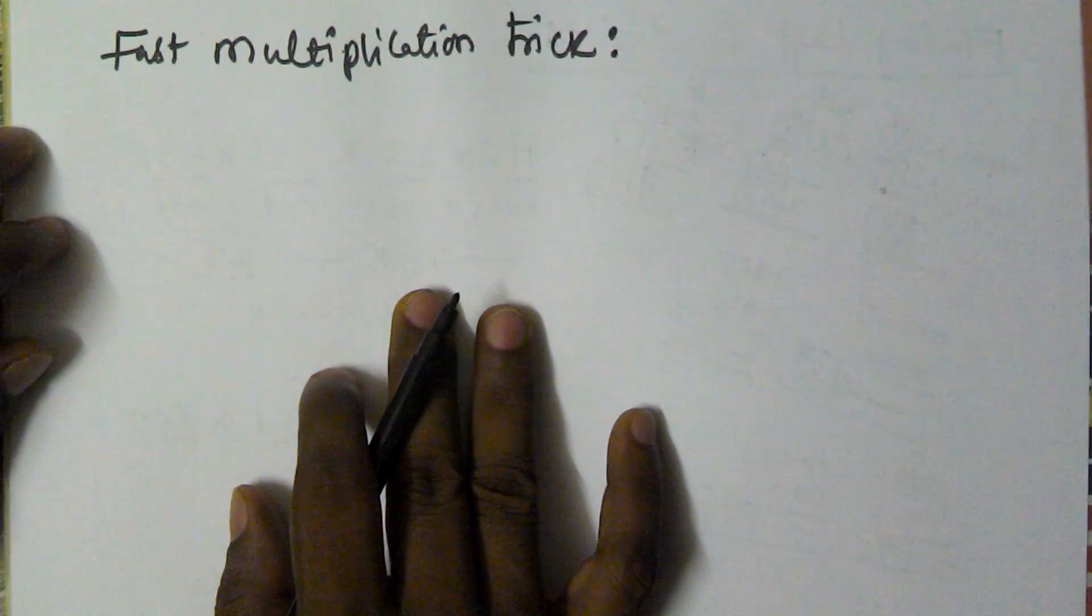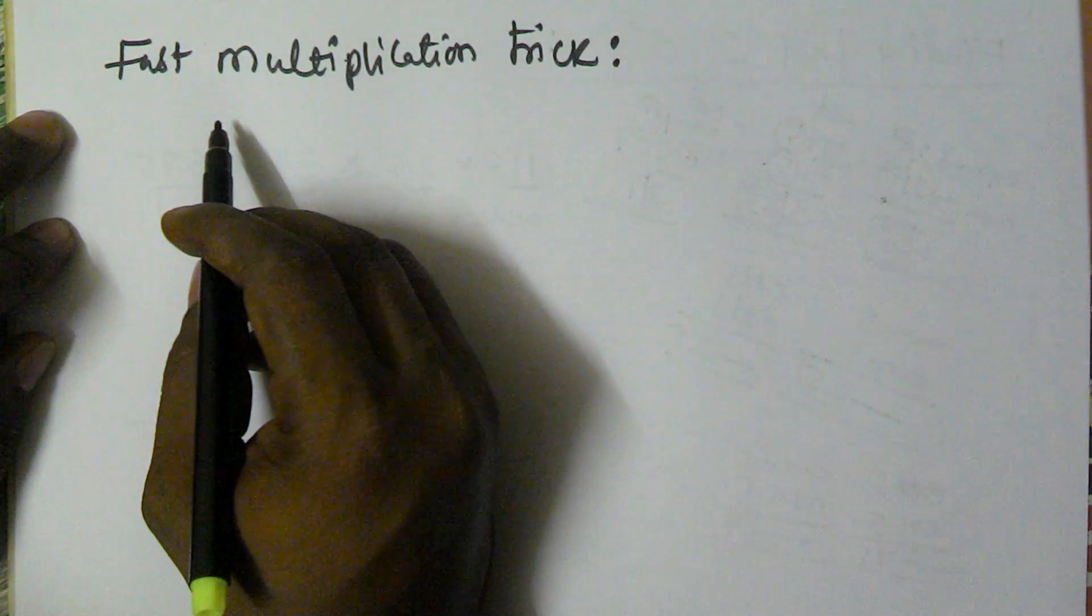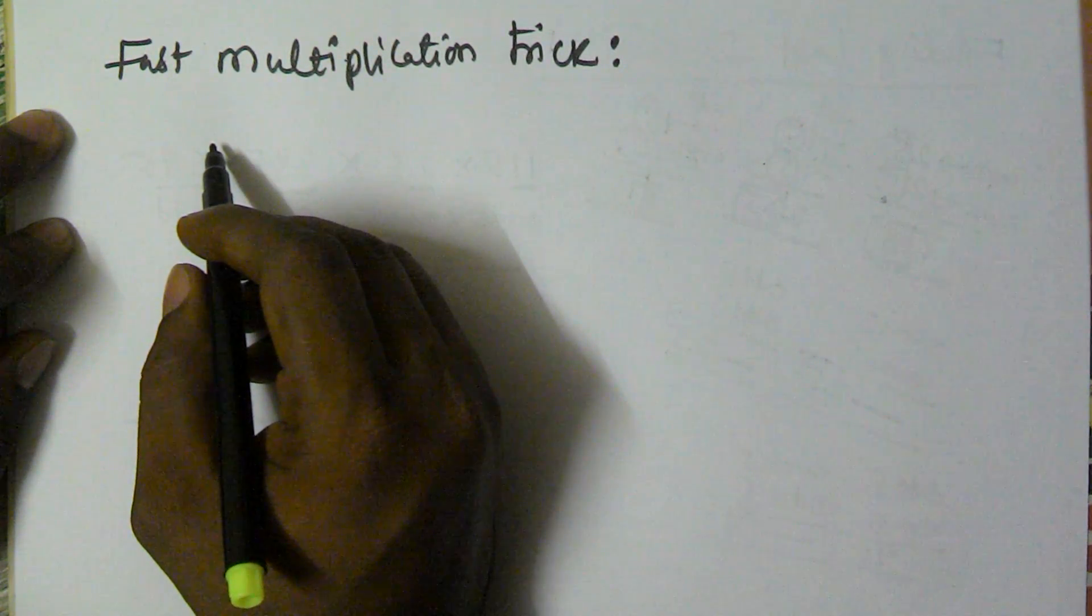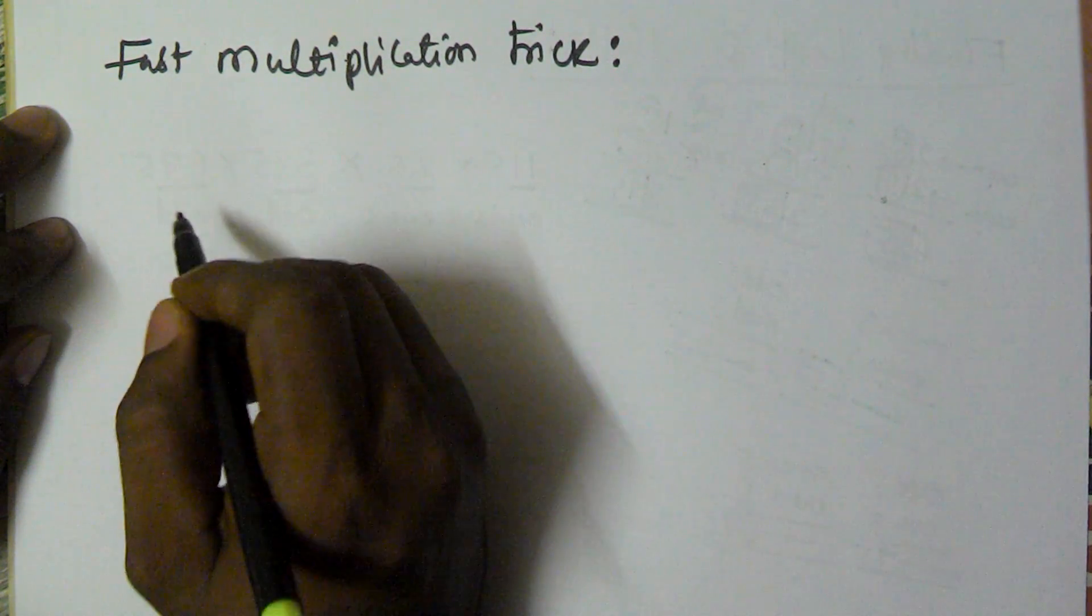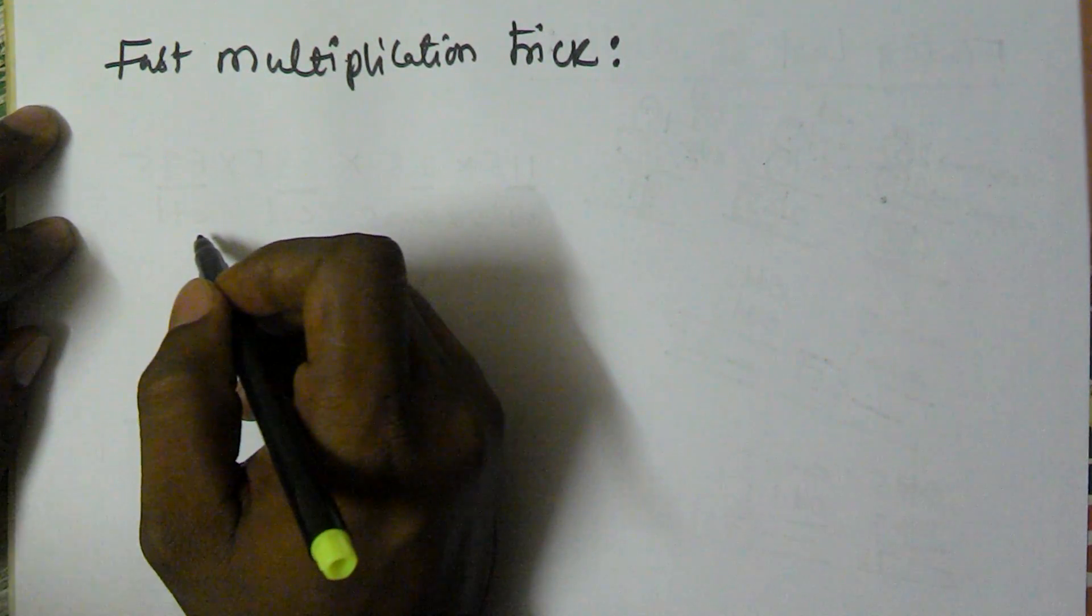Hello friends, in this video I'm going to show you a generalized way to multiply two numbers which are ending with 5. This generalized method is going to be very fast compared to the conventional method and it is very easy.